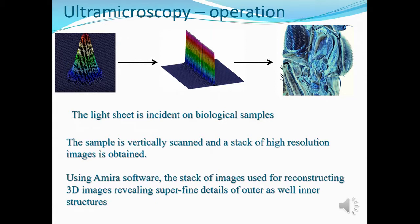Usually, when the light starts to propagate, it follows a special rule — it wants to expand, it wants to diverge. We try to control these aspects. And as you can see here, it is the image of the first fruit fly we imaged in our center by using these thin sheets of light. The details are amazing.